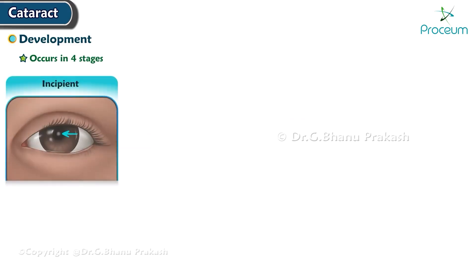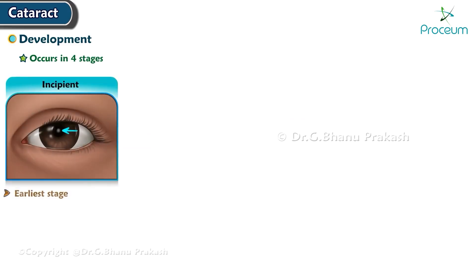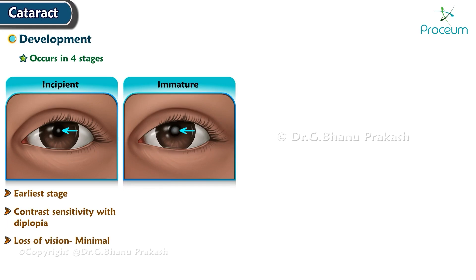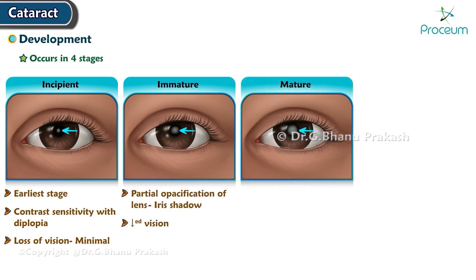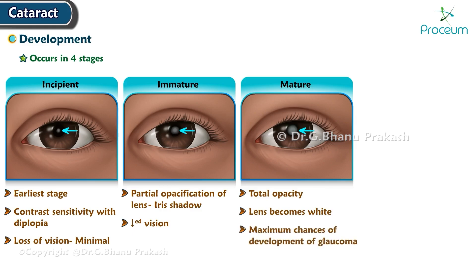Cataract development occurs in four stages. Incipient cataract is the early stage — there is contrast sensitivity with diplopia but minimal loss of vision. Immature cataract has partial opacification of the lens, giving an iris shadow, and there is decreased vision. Mature cataract gives total opacity — the lens becomes white and there are maximum chances of development of glaucoma.